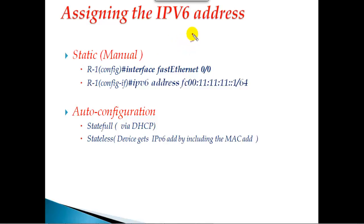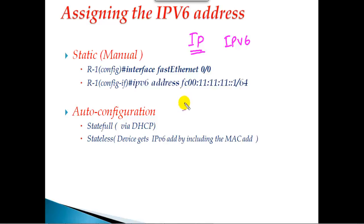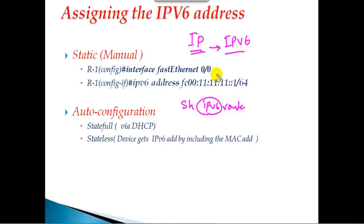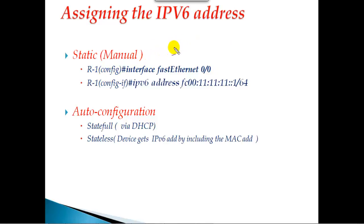When it comes to commands, we don't really need to learn any new commands. Whatever commands we use in IPv4 configurations, we just need to use similar commands — the only difference is wherever we use 'ip' we just need to change it to 'ipv6'. For example, 'show ip ospf neighbor' becomes 'show ipv6 ospf neighbor', 'show ip interface brief' becomes 'show ipv6 interface brief', and 'show ip route' becomes 'show ipv6 route'. Most configurations are almost similar.